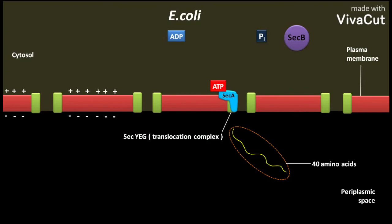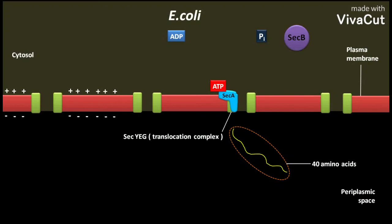For longer proteins, the release of the polypeptide by the withdrawal of SECA — driven by ATP hydrolysis — and the pushing of 20 amino acids across the membrane through the translocation complex are repeated until the entire protein has passed through and is released to the periplasm.